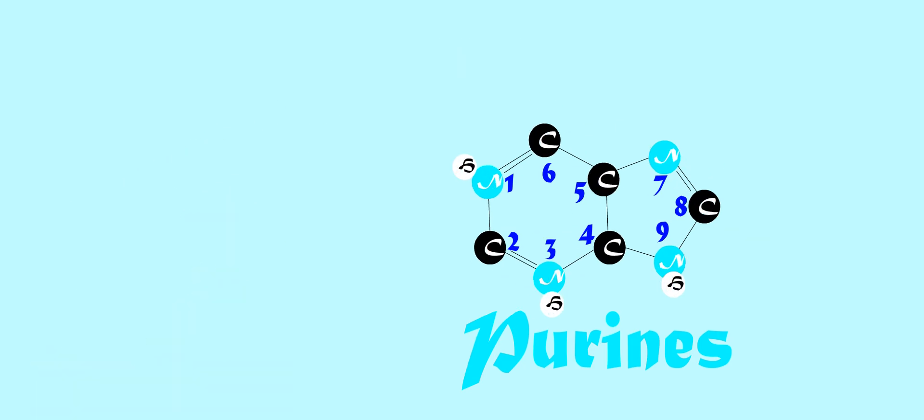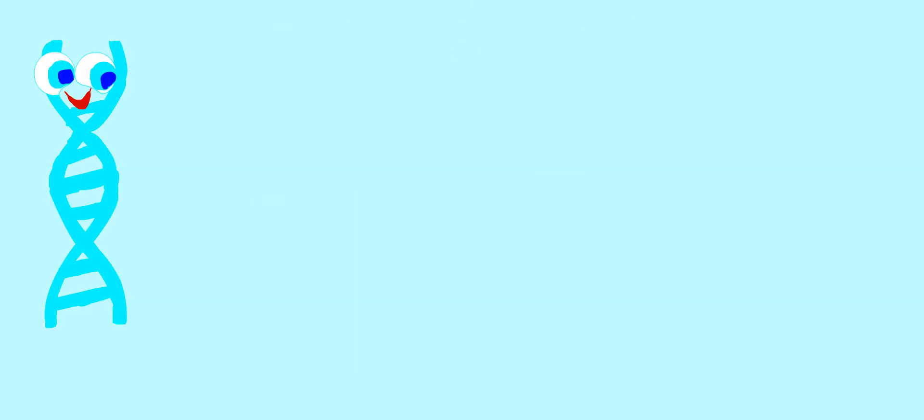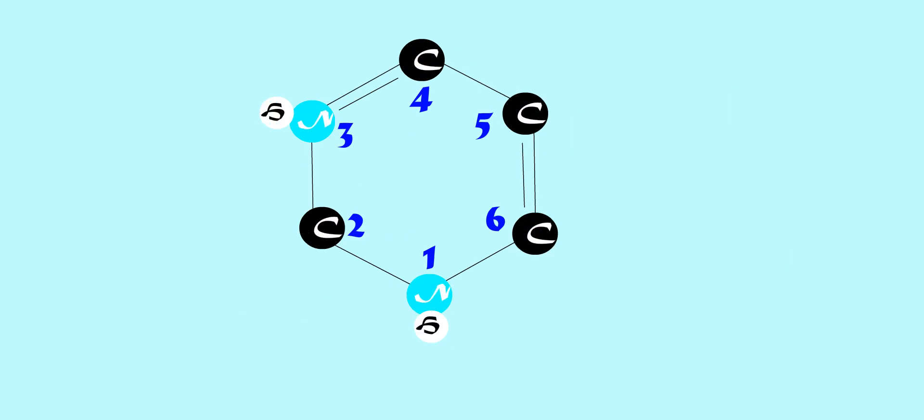purines and pyrimidines. The purine bases have a nine-membered double ring system with four nitrogens and five carbons. The purines present in DNA are adenine and guanine. The pyrimidine bases have a six-membered ring with two nitrogens and